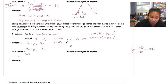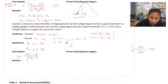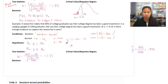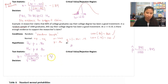So z equals 0.845 minus 0.86, divided by the square root of 0.86 times 0.14 all over 1,000. When you do that in the calculator, you should get negative 1.37 rounded to two decimal places.